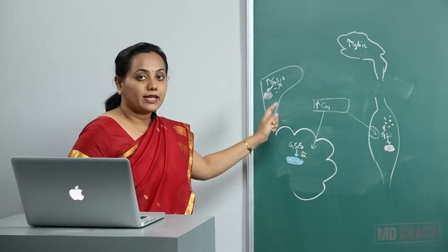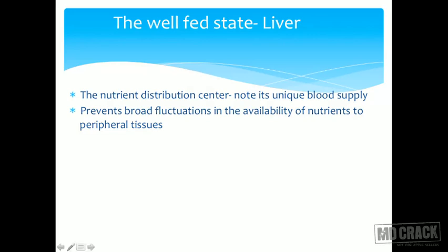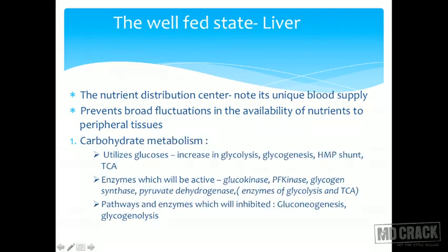The liver is the nutrient distribution center from where all nutrients are carried to different parts of the body. It has a unique blood supply from both the portal vein and the hepatic vein, so nutrient-rich blood from the intestine reaches the liver first. This prevents broad fluctuations in nutrient availability to peripheral tissues; the liver acts as the gate regulating how nutrients reach different tissues, all under insulin's control.